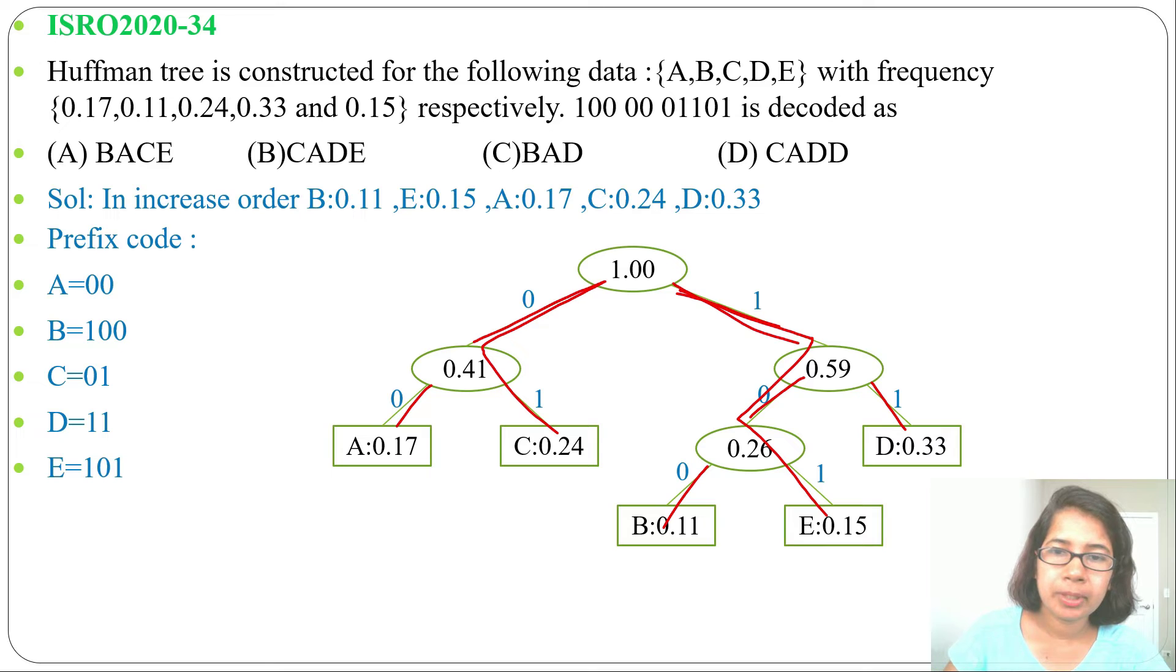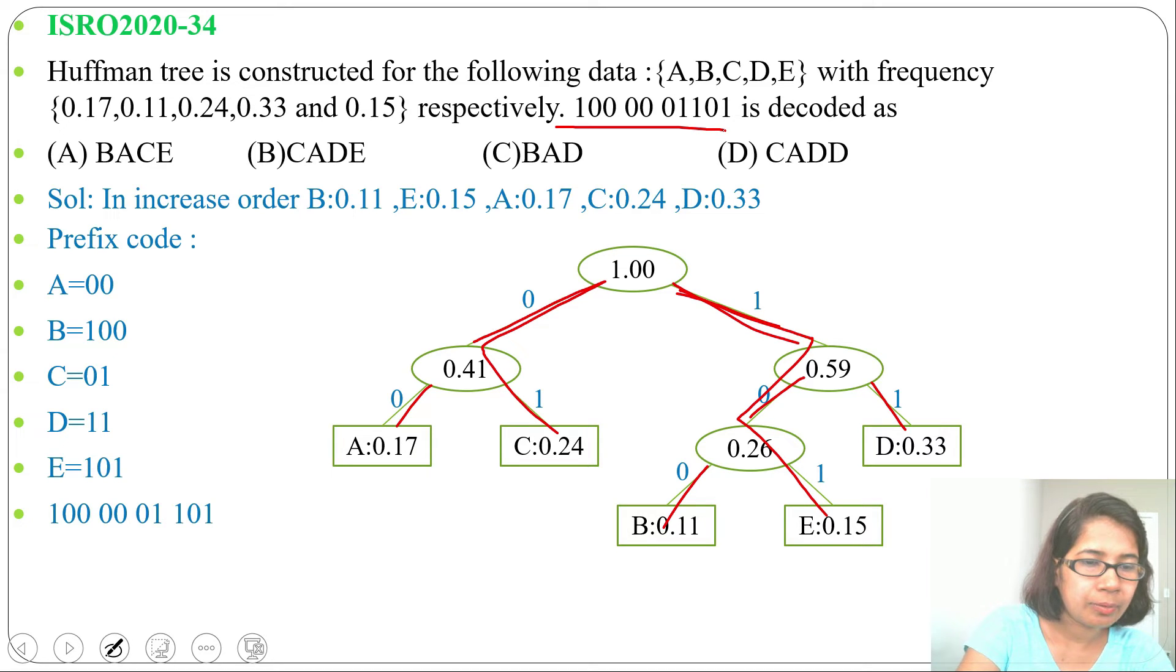Now I got all the prefix code, next we will compare with this code. So 1, 0, 0 is for B, then 0, 0 that is for A, next 0, 1 that is for C, 1, 0, 1 that is for E. So we got B, A, C, E.